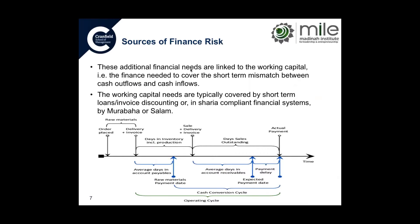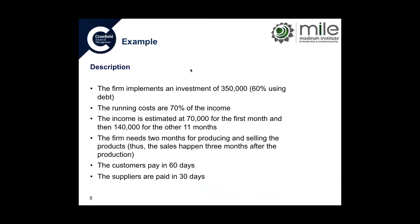In order to understand how it works, let us look at an example. These are the data I built to explain how to estimate the working capital needs. The investment is $350,000. The firm has available funds — retained profit, cash available in bank, or additional equity — that can cover 40% of the investment needed to buy the assets. Thus, the firm needs only 60% of additional finance that has to be financed using bank finance.